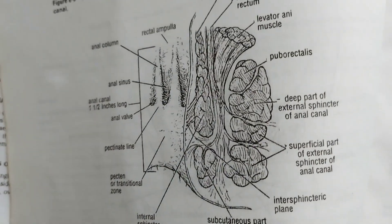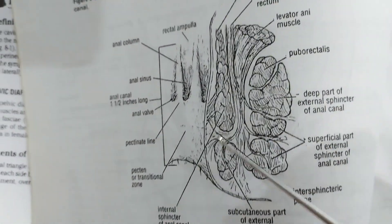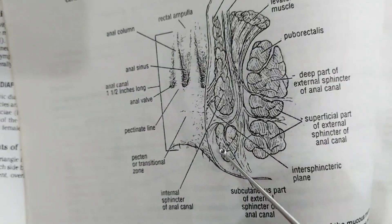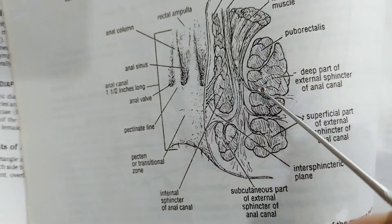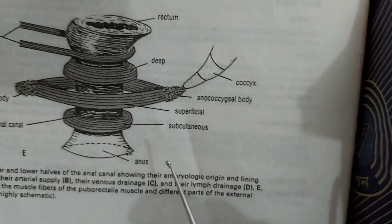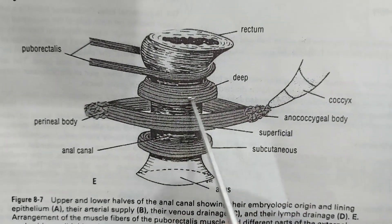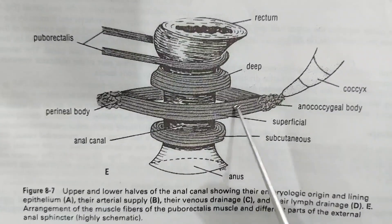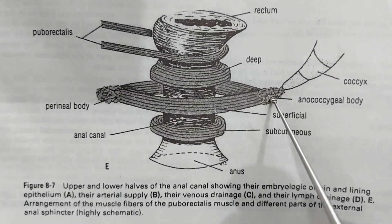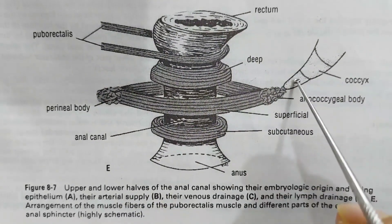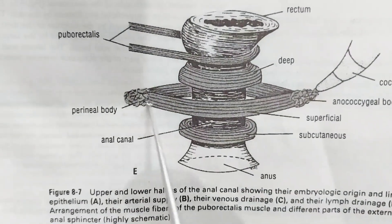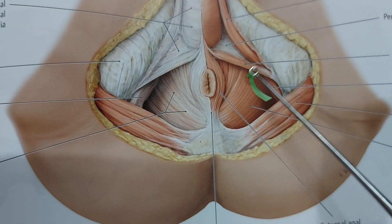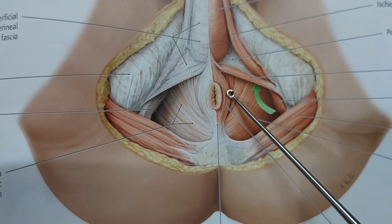Here we see a diagrammatic view of the anal canal. The internal anal sphincter is shown, along with the external anal sphincter's subcutaneous part, superficial part, and deep part. In the body, the deep part is uppermost, followed by the superficial part and then the subcutaneous part. The superficial part has an attachment from the coccyx to the perineal body, and it is visible here in the perineal region.